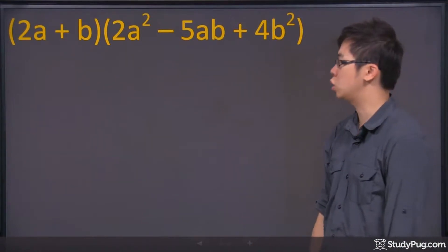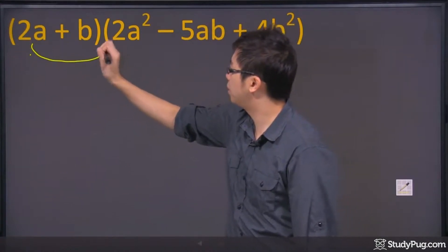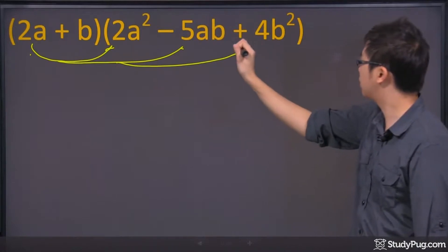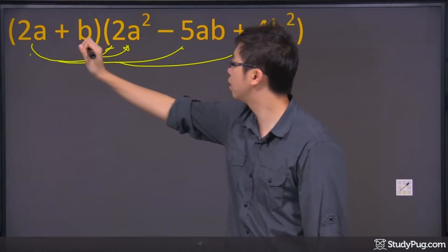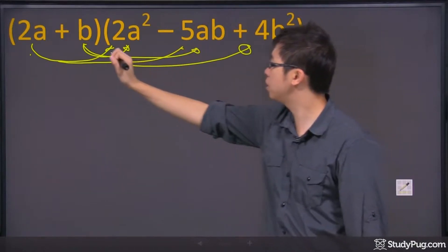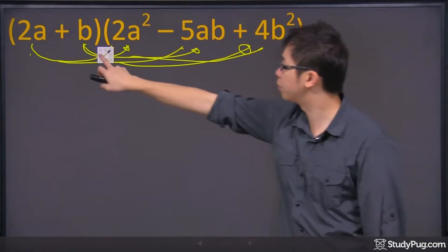So this is going to be a lot of calculation, because this 2a right here has to get multiplied by this, then this, and then this one here. And same thing with the b, multiply the 2a, multiply by the negative 5ab, and finally the 4b squared.